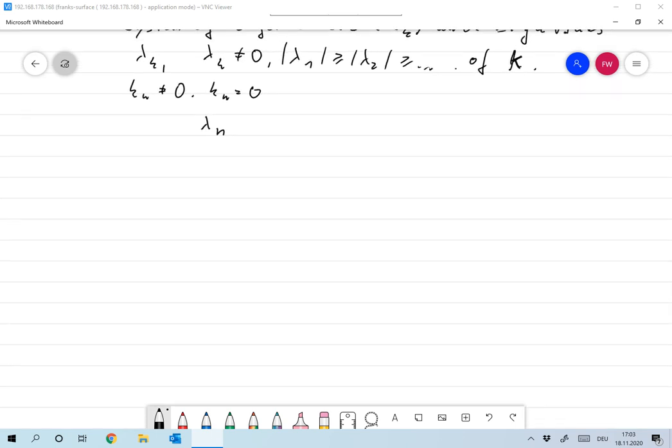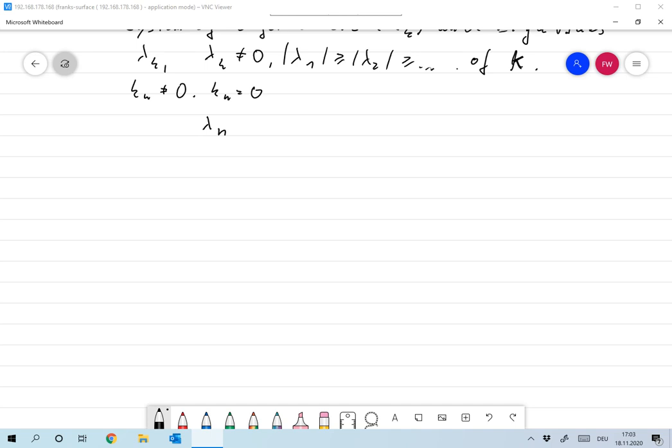What would that mean? It would mean that if λₙ, and now I'm thinking about the case of infinitely many eigenvalues and eigenvectors, if λₙ is bounded from below, it's a monotonic decreasing function. And if it's bounded from below, that means that the absolute value of λₙ converges and it converges to some c. And that c should not be zero, with a limit that's larger than zero.